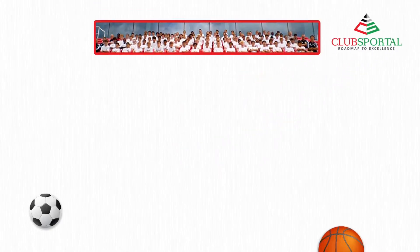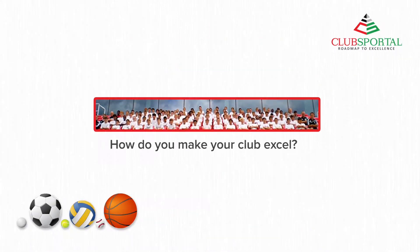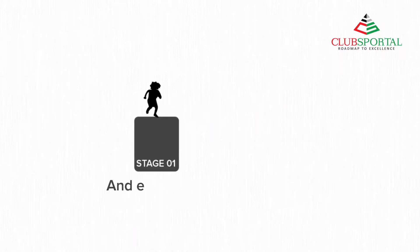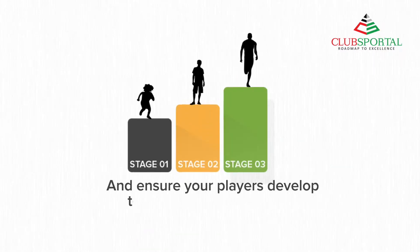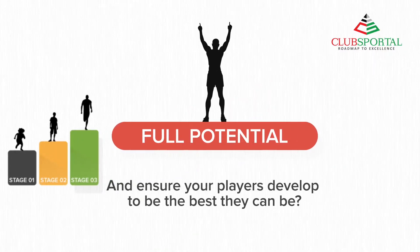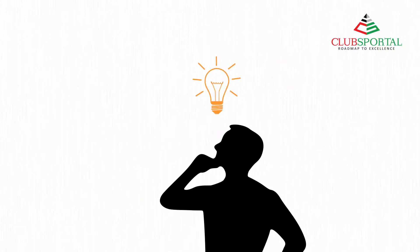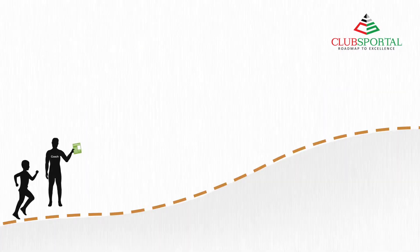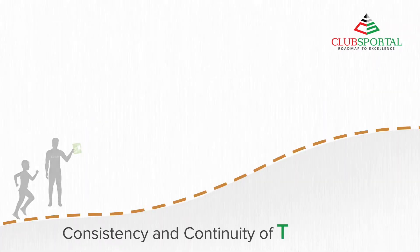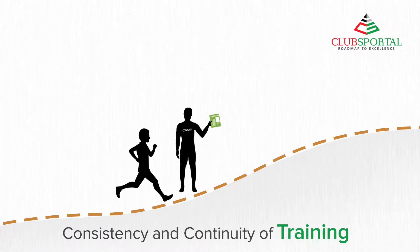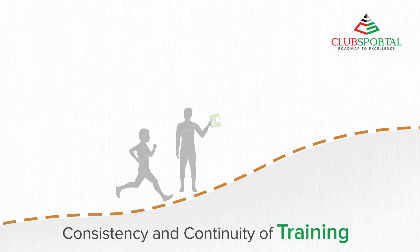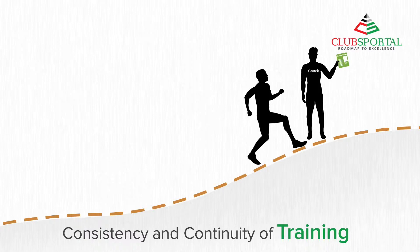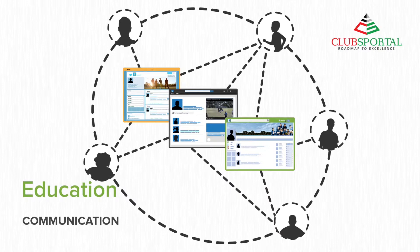You want your club to excel. How do you make that happen? How do you ensure your players develop to be the best they can be and reach their full potential? You need your leaders to define your club's vision, curriculums and training programs for every member to follow. You need consistency and continuity of training, stage by stage, phase by phase, to ensure proper development for every player in your club. You need communication, knowledge sharing and exchange.